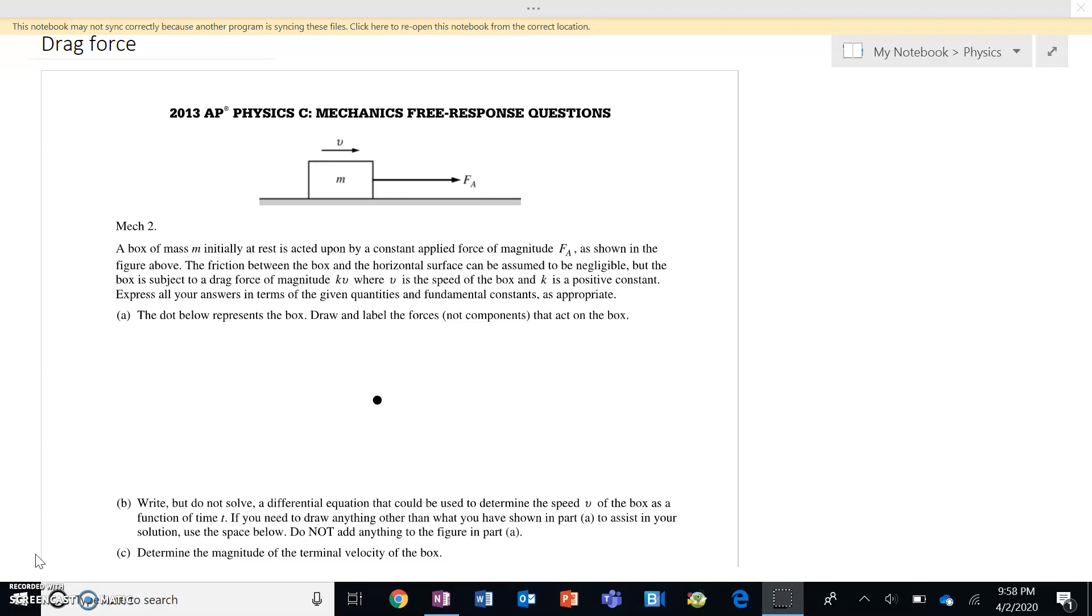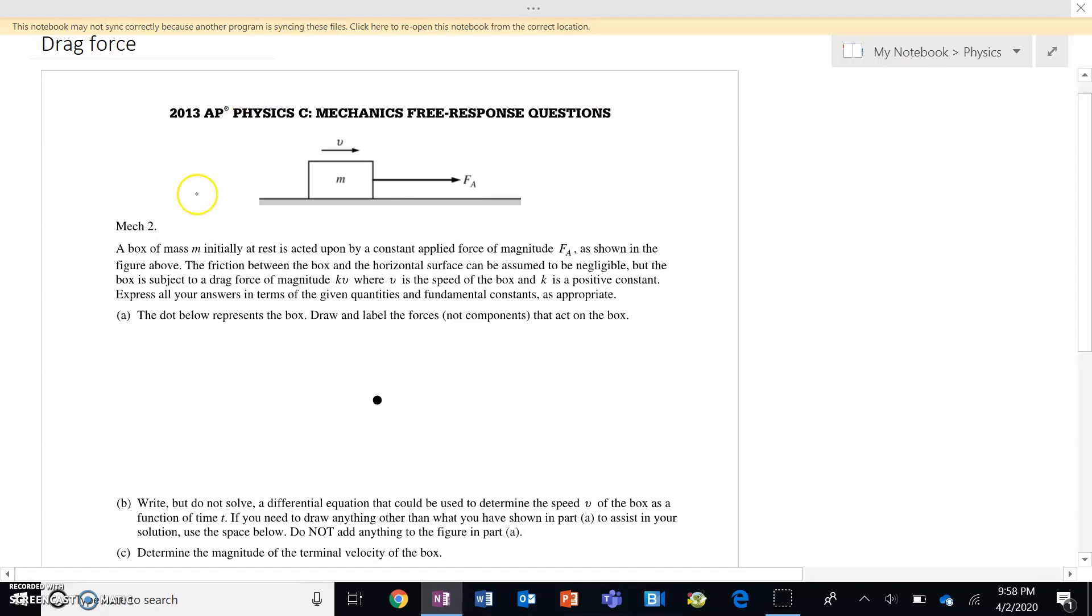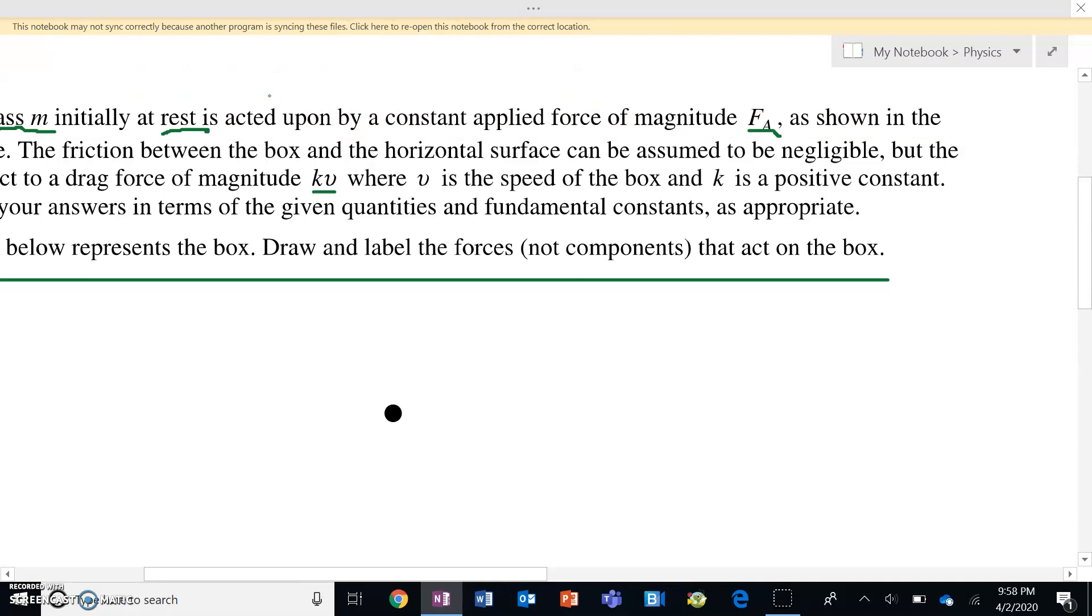As you can see, it's from the AP Physics C Mechanics exam in 2013. You can look it up if you want to, but I'm about to be solving it right now. So let's just pick a pen and go. A box of mass M initially at rest, that's a keyword, acted upon by a constant applied force FA and then subject to a drag force. So here, the dot represents the box. Draw and label the forces. If you don't know already, this kind of illustration in physics is called a free body diagram. So we are about to draw the free body diagram with all the forces that act on the box.